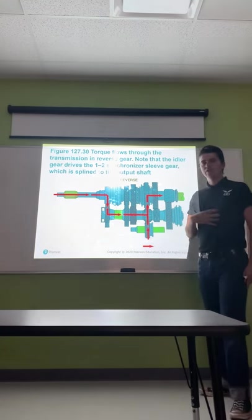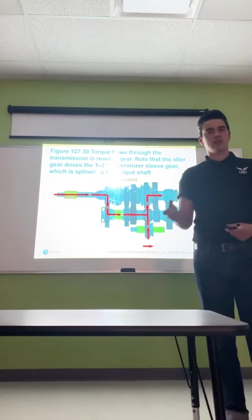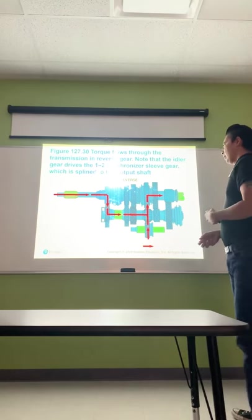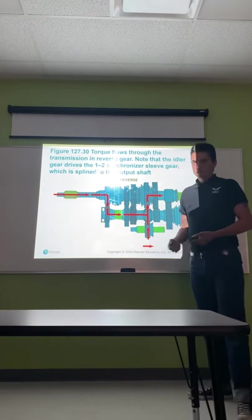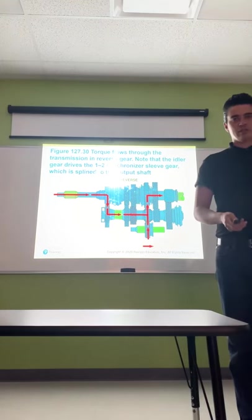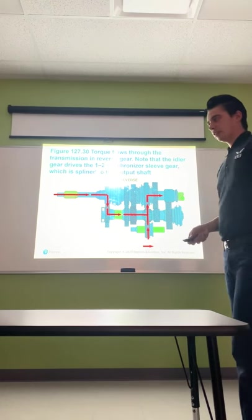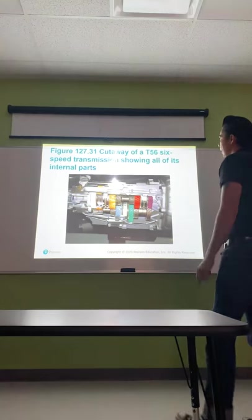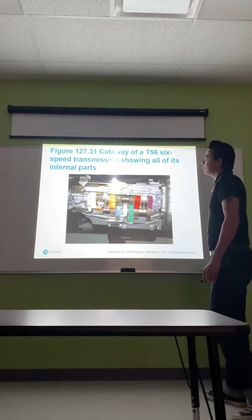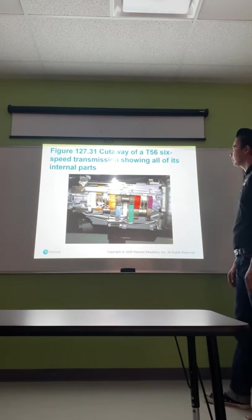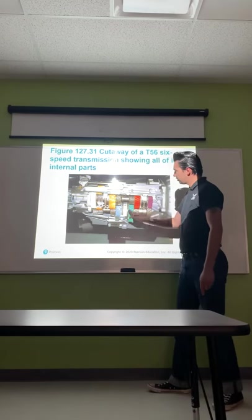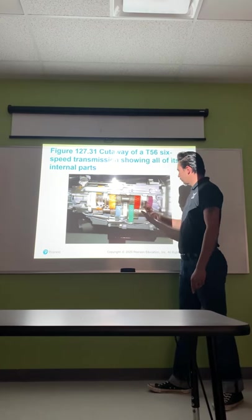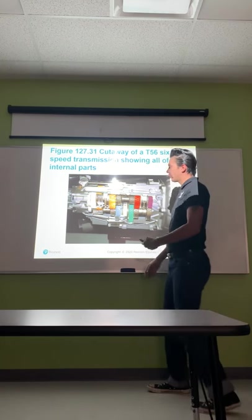I want to do a virtual lab to walk you through getting a cover off one of the manual transmissions to show you some of the insides. The cutaway shows a T56 six-speed transmission with all of its internal parts — all your different gears, synchronizers, and the collars that you shift left and right to engage whichever gear you want.